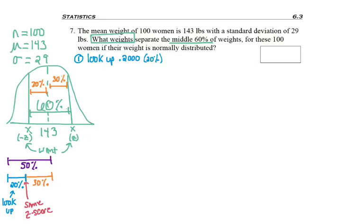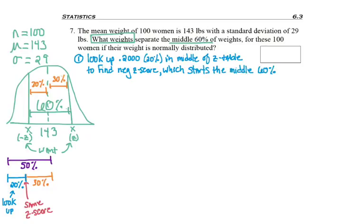So step one, I want to look up 0.2000 because that's 20% in the middle of the z-table to find the negative z-score, which starts the middle 60%. So first thing I need to do is get this negative z-score, and I'll do it by looking up the point 2000. And remember, I know it's a negative, so I know which table to start with, the negative z-table.